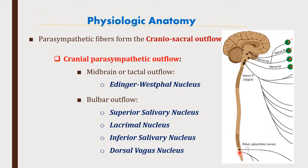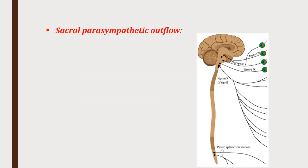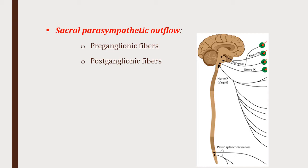In the sacral outflow, the cell bodies are present in the intermediolateral gray horn of the spinal cord, similar to the sympathetic nervous system where the cell bodies of the thoracolumbar outflow also lie in the intermediolateral gray horn. Like the sympathetic fibers, the parasympathetic system is also under the influence of higher centers, mainly the hypothalamus and the limbic system.